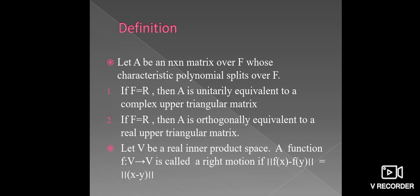Now see the rigid motion definition. Let V be a real inner product space. A function f: V → V is called a rigid motion if ||f(x) - f(y)|| = ||x - y||. This is the definition of rigid motion. Thank you.